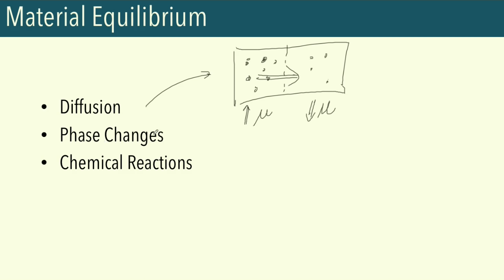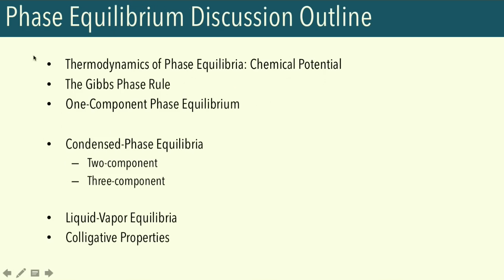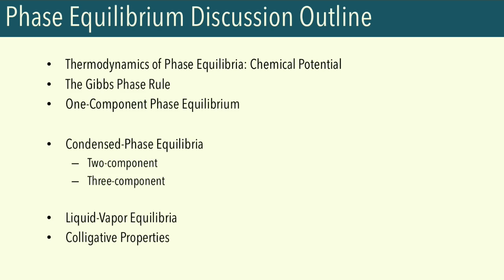For our discussion on phase changes, here's an outline. For this video, we'll be looking at the thermodynamics of phase equilibrium in the context of chemical potential. We'll also discuss the Gibbs phase rule, first applied to one-component phase equilibrium. In our next video, we'll expand to multiple-component systems — first considering condensed phase equilibria, then liquid-vapor equilibrium, and also colligative properties like osmotic pressure and vapor pressure lowering.